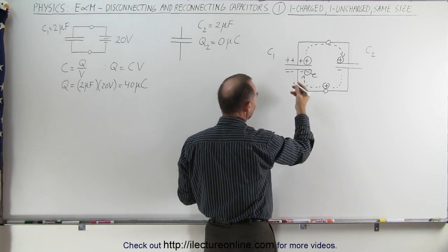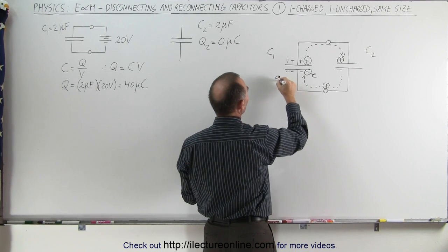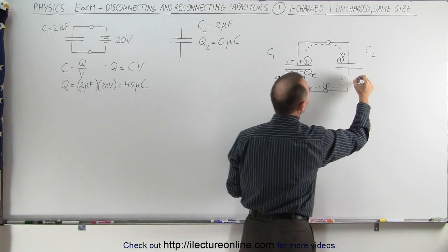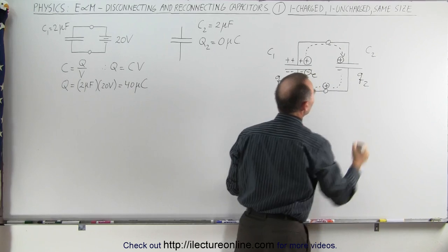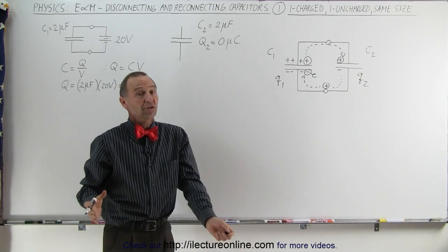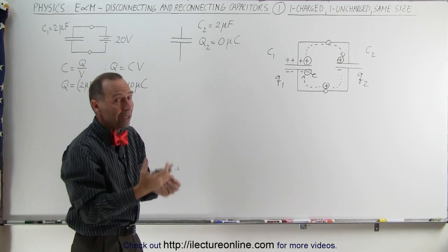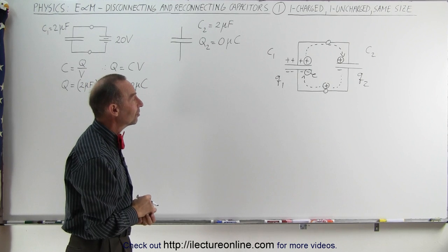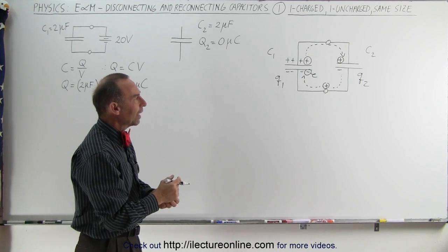Now that means that at the end when you reach steady state, this capacitor will have charge Q1 on it, and this capacitor will have charge Q2 on it. The question is, what is Q1 and Q2 equal to once they reach steady state? How do you solve that?